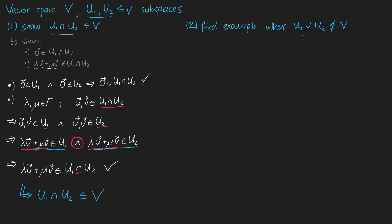In the second task of our exercise, we are dealing with the union of u1 and u2. We need to find an example where the union is not a subspace of v. In contrast to the first task, we now need to disprove one of those statements. Because u1 and u2 are valid subspaces, they both definitely have a zero vector, so the union of u1 and u2 will also always have a zero vector. That means we cannot disprove the first statement.